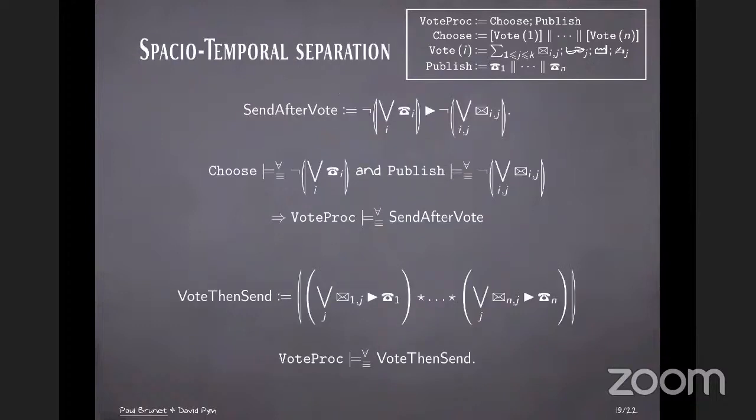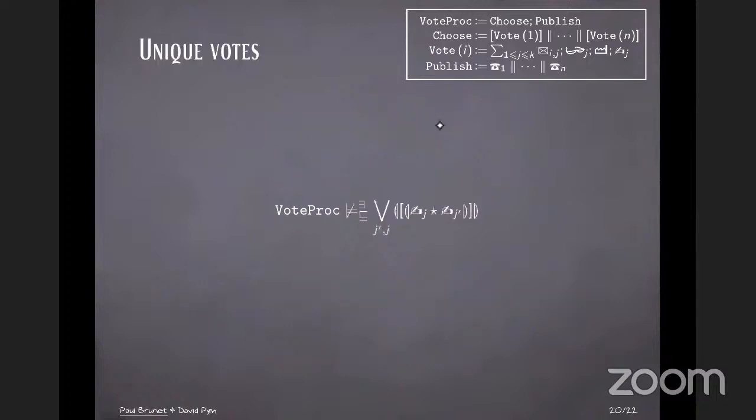There's also, so we have this sequential separating conjunction and parallel separating conjunction, which allows us to express things like the first one says that the protocol can be split into two phases. First, a phase where no broadcast is happening, and then a phase where no vote is happening. So saying that we only send to the voters the result after everybody has voted. We can also write the formula below, saying that from the point of view of each individual voter, we can see the voting happening before the reception of the result. We can also express something like everybody votes only once, and nobody can vote twice.